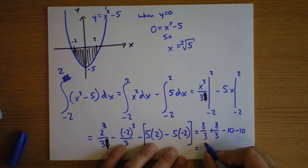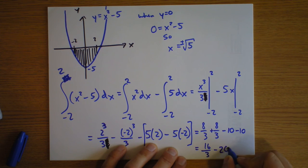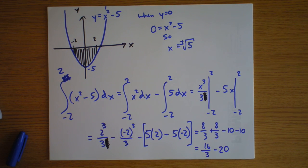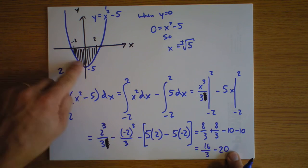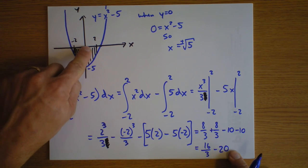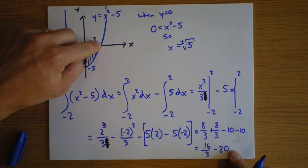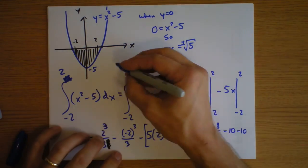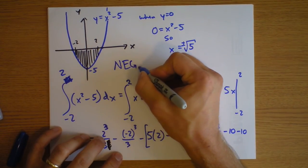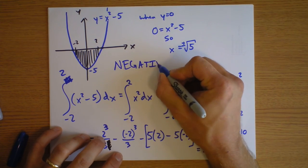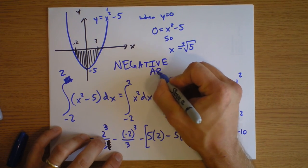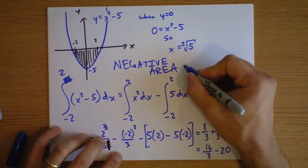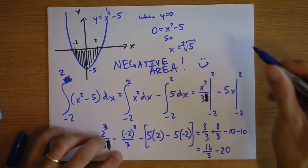So, this is 16/3 minus 20. That's a negative number, isn't it? Quite negative. And, that's consistent with the fact that this area is... Well, the curve is below the x-axis. So, we should get a negative area. Negative area may sound a little bit strange to you. But, I'm going to write it out. And, you're going to smile. Like that. Okay.